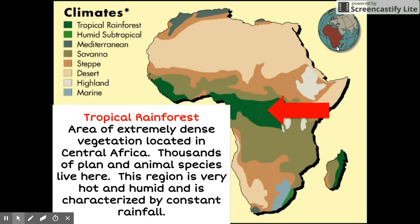Tropical rainforests are areas of extremely dense vegetation located in Central Africa. Thousands of plant and animal species live here. This region is very hot and humid and is characterized by constant rainfall. You may recognize this type of climate from movies like Tarzan and Madagascar.